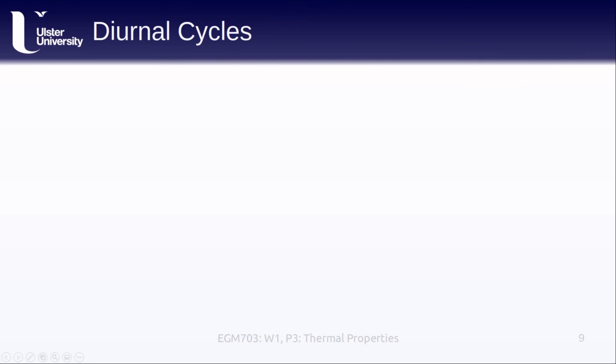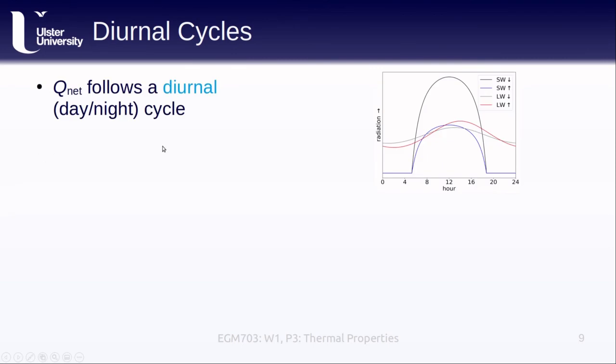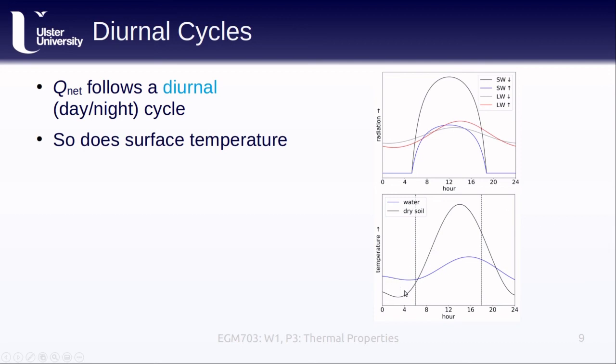So, hopefully, it's clear to you that Q net, or the net radiation, because it is so heavily tied to solar radiation, follows a diurnal, or day-night cycle. In the graph here, we can see that at night, so between about, well, in this example, between about 7 p.m. and about 6 a.m., or 6 a.m. and 6 p.m., it's not that important, we can see that the incoming and outgoing shortwave radiation dropped to zero. This is because this is the hours between sunset and sunrise. We can also see that the incoming and outgoing longwave radiation also follows a diurnal cycle, albeit slightly shifted, and this is because the surface temperature also follows a diurnal cycle.